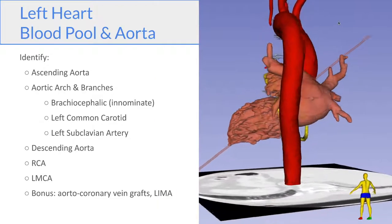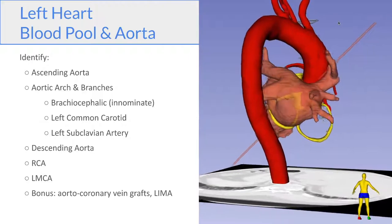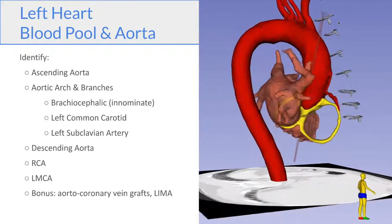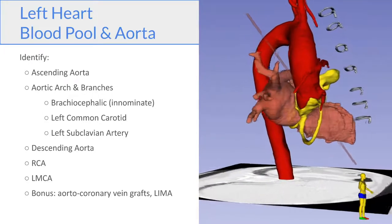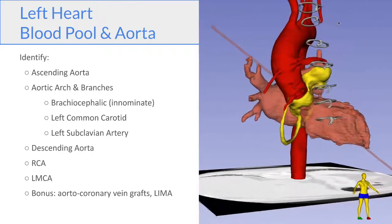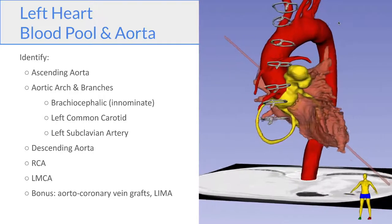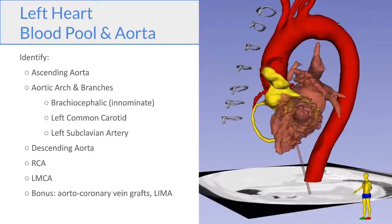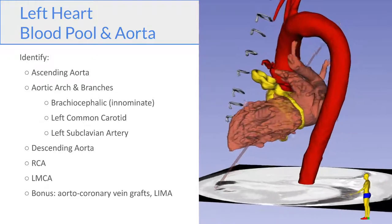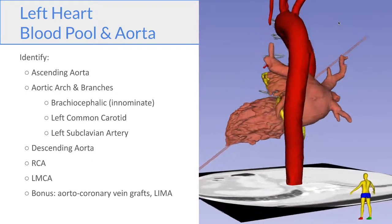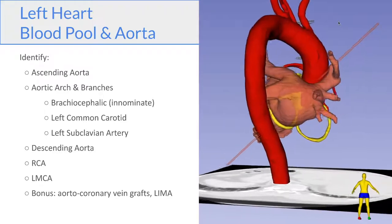Now we add the aorta. You can see the ascending aorta, the aortic arch, and its branches, the brachiocephalic, the left common carotid, and the left subclavian. You can see the descending aorta. And if you look closely at where the aorta takes off from the heart base, you can see the start of the RCA and the left main in the coronary artery as the model rotates around.